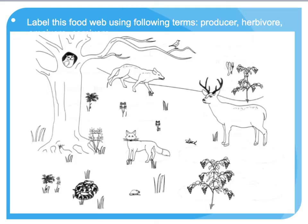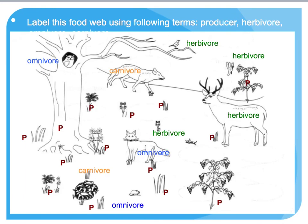One last activity: on this image, label the producers, herbivores, omnivores, and carnivores. The easiest way is to write the first letter next to each organism — for example, write 'P' next to a plant for producer. Pause the video, complete the labeling, then play it to check with the key on the next slide. Hopefully you identified the various organisms as producers, herbivores, omnivores, or carnivores.